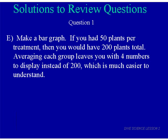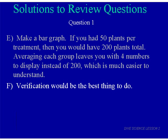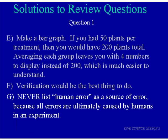Part F: if your hypothesis was proven correct, what would be the best next step — buy the fertilizer brand or verify your experiment? It's always better to verify an experiment. Finally, in describing sources of error, is it more descriptive to list 'human error' or 'improper measurement of plant height'? You should never list human error as a source of error because all errors are ultimately caused by humans. It would be better to write 'improper measurement of plant height' as a specific source of error.